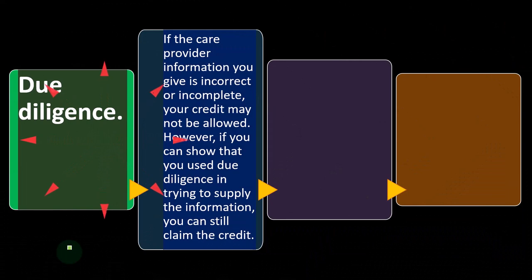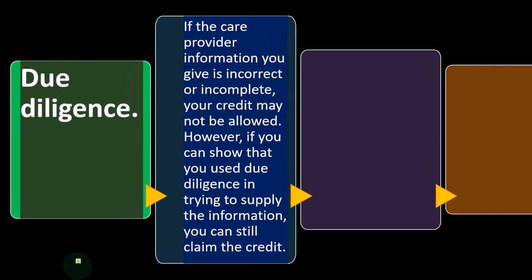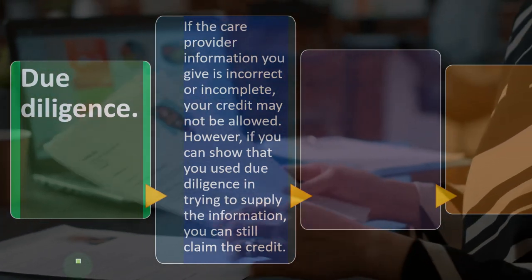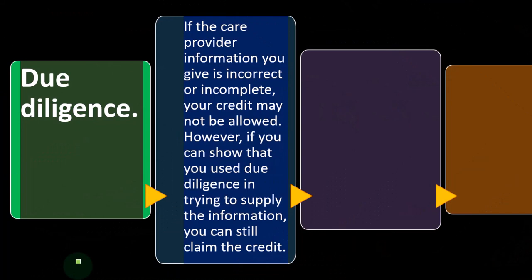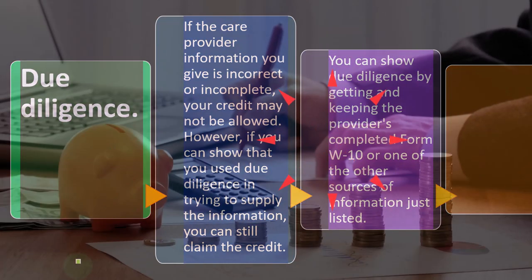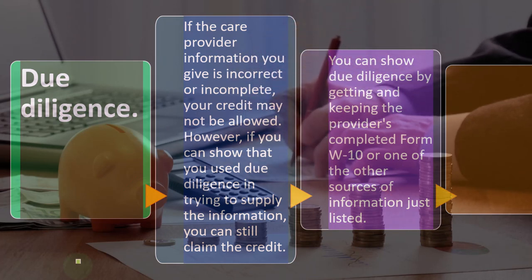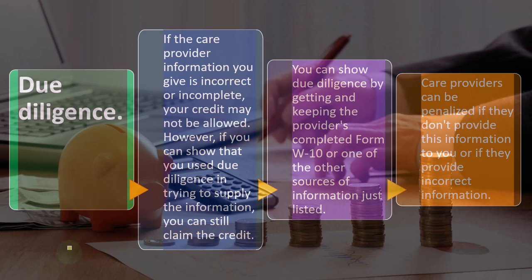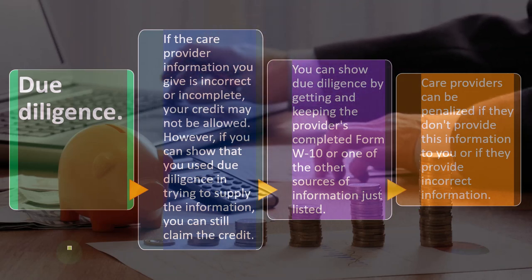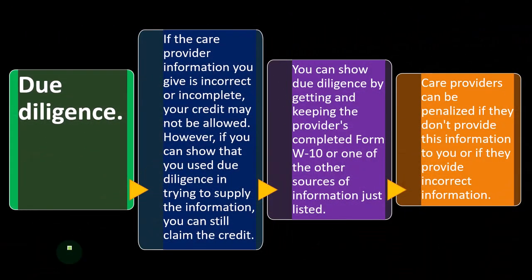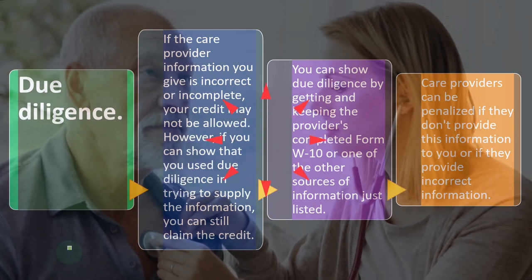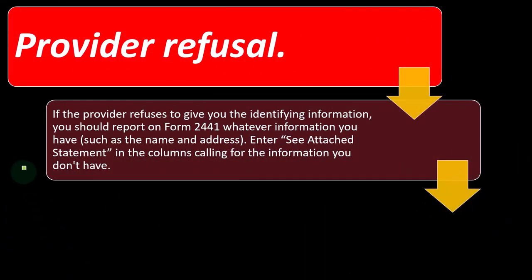Due diligence: if the care provider information you provided is incorrect or incomplete, your credit may not be allowed. However, if you can show that you used due diligence in trying to supply the information, you can still claim the credit. You can demonstrate due diligence by getting and keeping the provider's completed Form W-10 or one of the other listed sources. Care providers can be penalized if they don't provide this information or provide incorrect information. If they're operating as a care-providing business, they should be able to supply it; if an individual, you'll need to obtain it to take the credit.